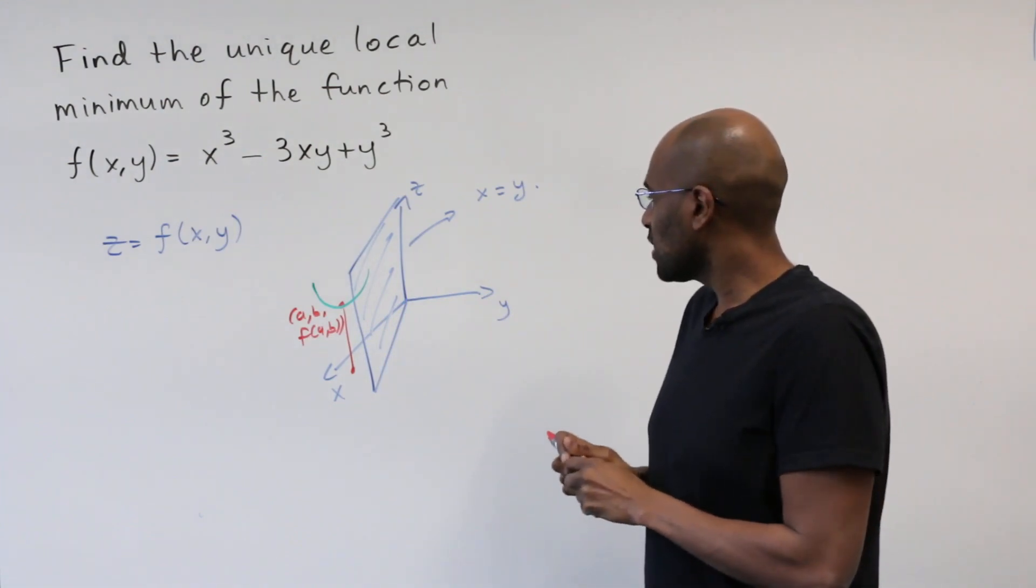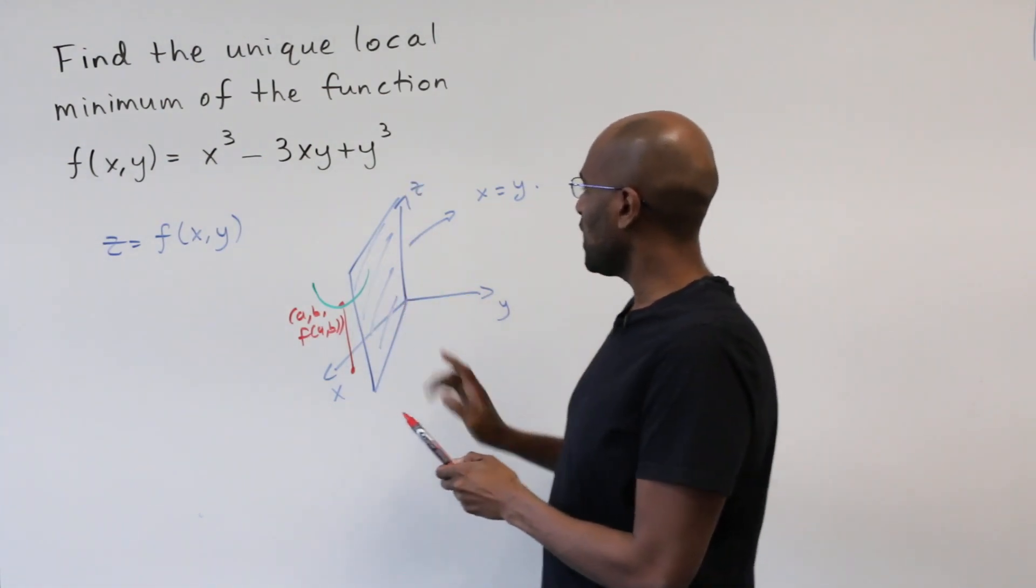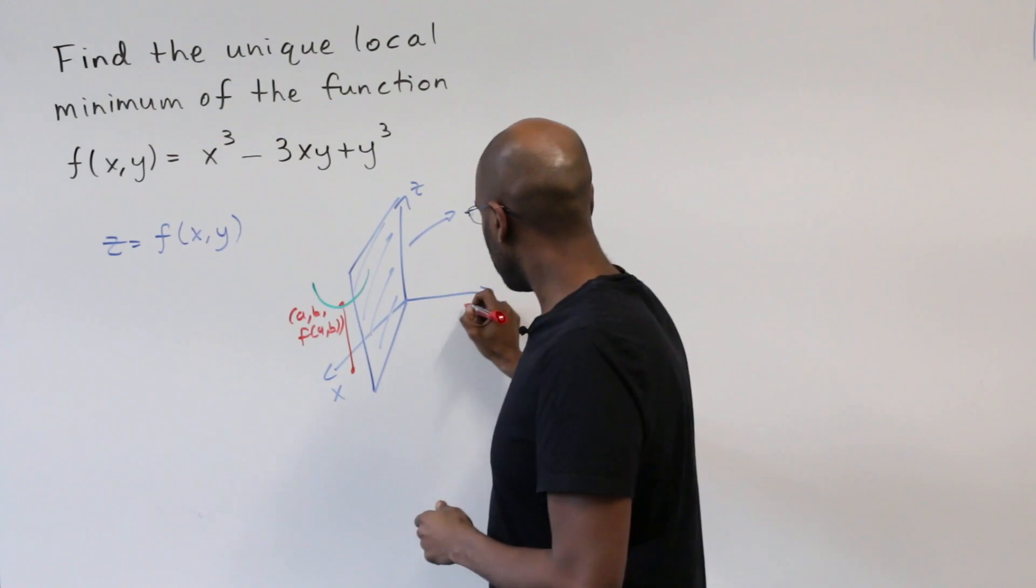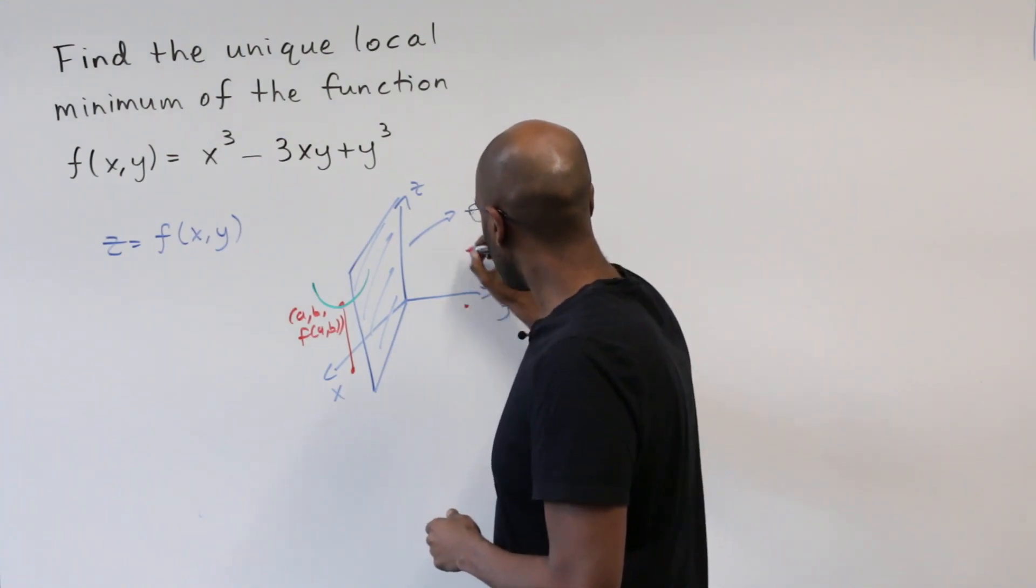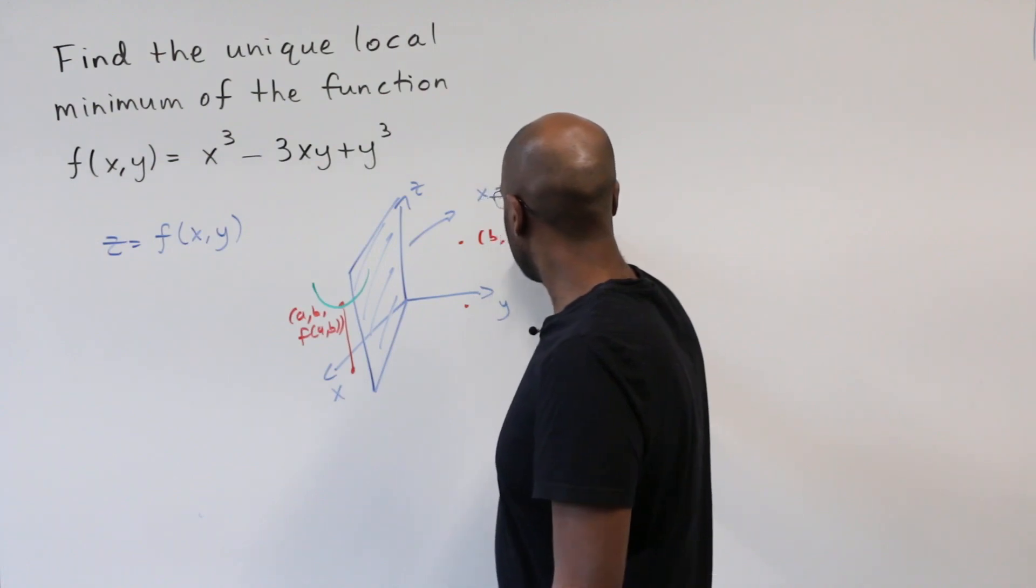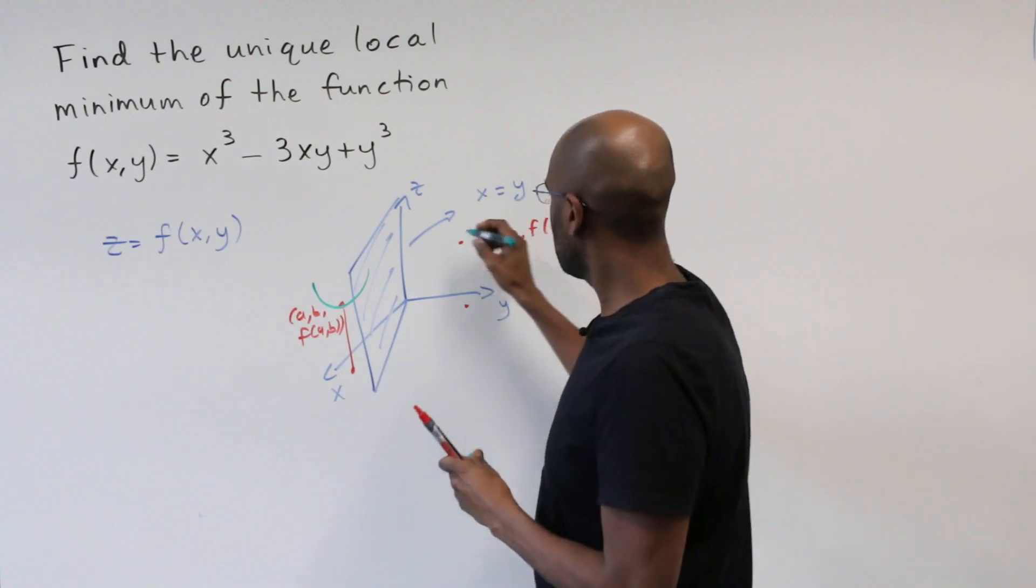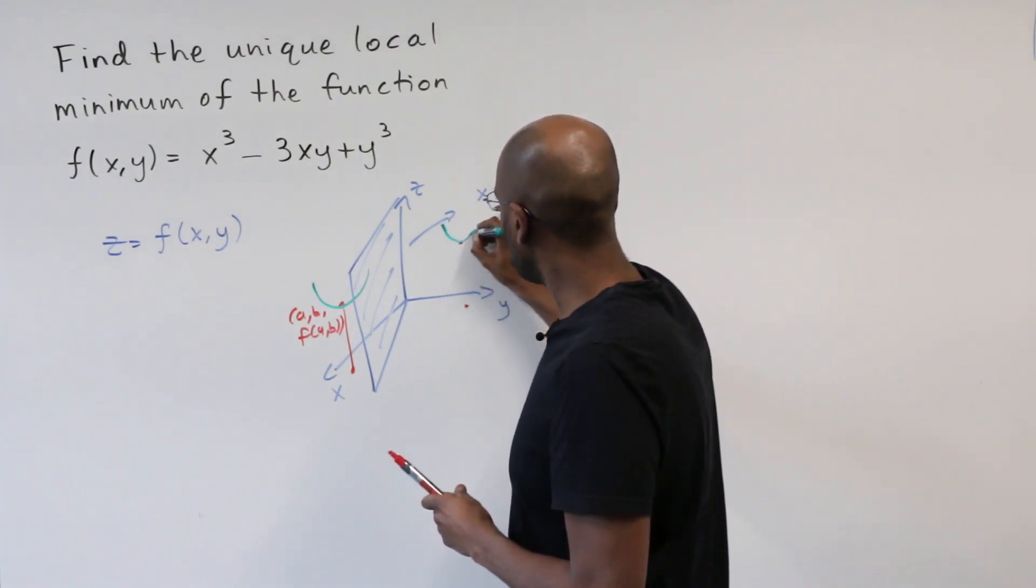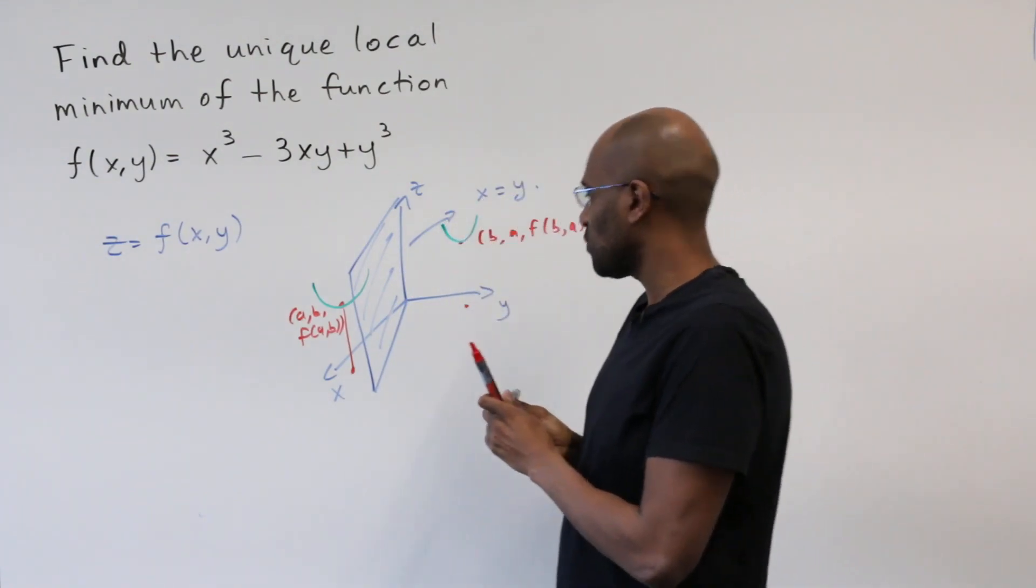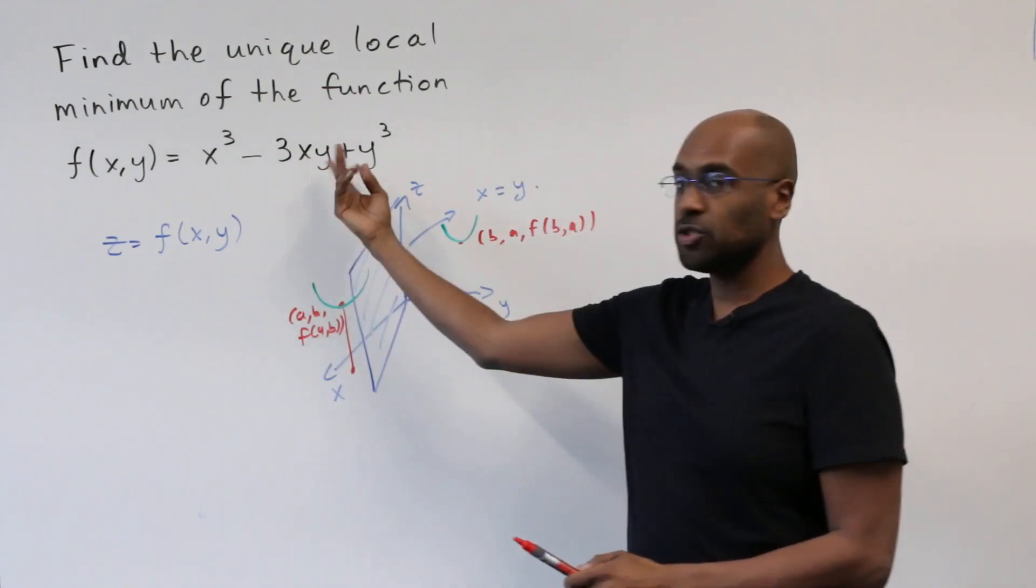Well then, if that's the case, by symmetry about the plane x equals y, the picture over here at the point b a, f of b a, is going to be the same. Because locally what's happening at x, y is the same as what's happening locally at y, x by the symmetry of this function.